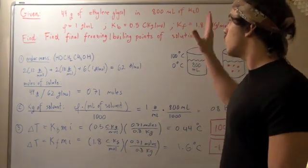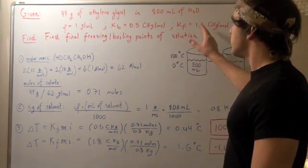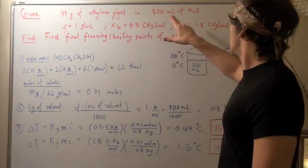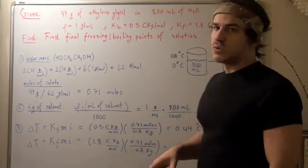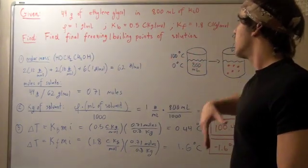We're given the density of our water to be one gram per milliliter, and our constants for boiling and for freezing are 0.5 and 1.8. So our goal is to find the final freezing and boiling point of the solution.